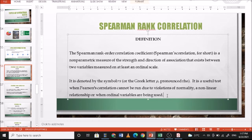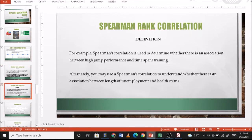If there are outliers, you can use Spearman Rank correlation to test for the relationship instead of Pearson's R. For example, Spearman's correlation is used to determine whether there is an association between high jump performance and time spent training. Alternatively, you may also use Spearman's correlation to understand whether there is an association between length of unemployment and health status.